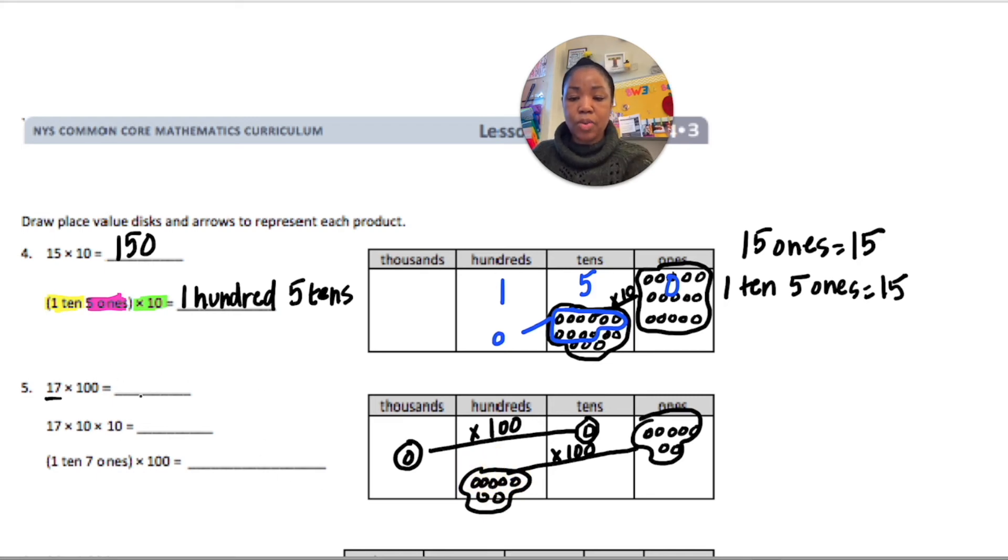So, we have 1 thousand, 7 hundreds, no tens and no ones, which is 1,700. So, 17 times 10 times 10 is 1,700. We could say that this is 1 ten times 100. Remember, we moved that two spaces, we got 1 thousand. And the 7 ones, when we moved it two spaces, we got 7 hundreds.